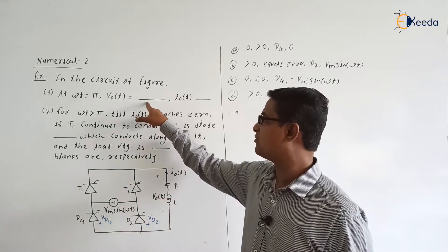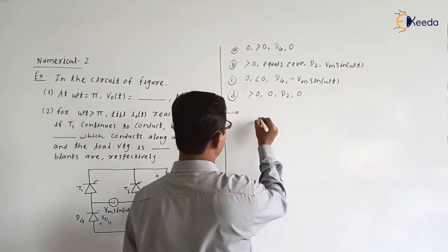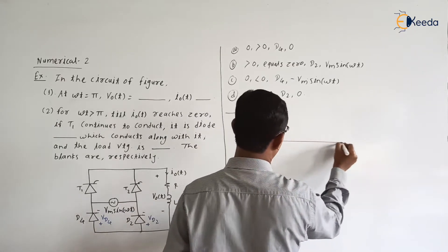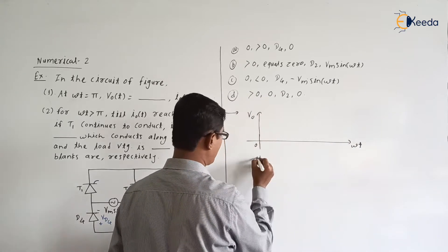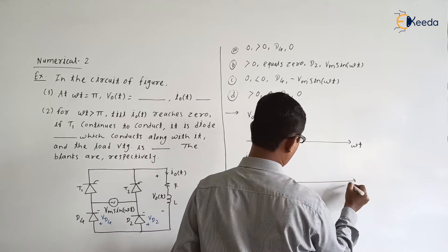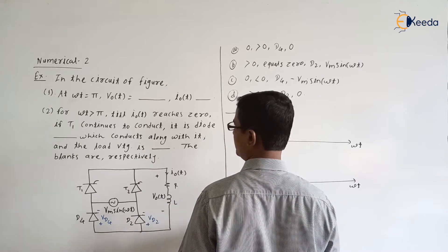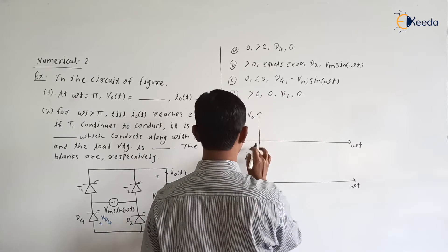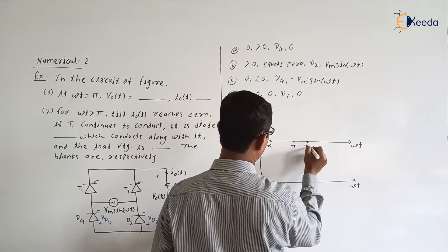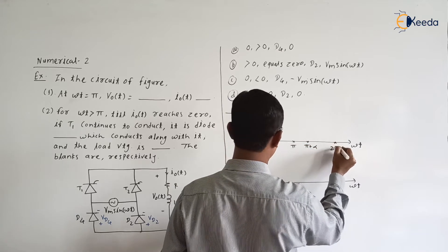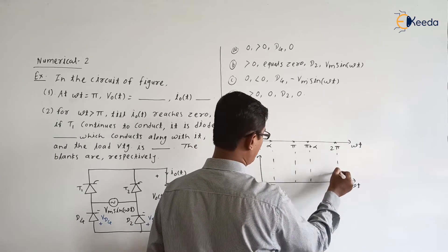They have asked specifically about V zero of t, I zero of t, and which diode conducts. For this circuit, can we draw the waveform? Yes, we already discussed this circuit. The time axis is omega t. We draw V zero and I zero. The load is RL. The conduction intervals are: zero to alpha, alpha to pi, pi to pi plus alpha, and pi plus alpha to 2 pi.